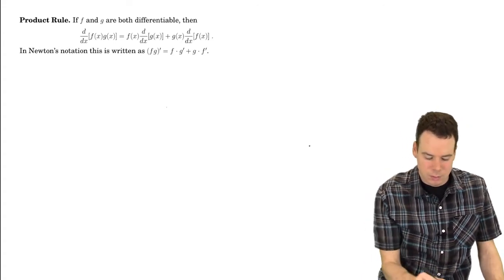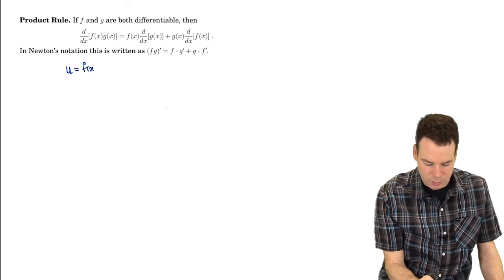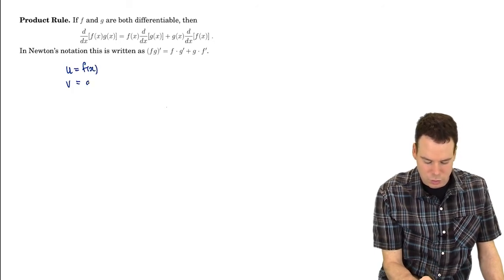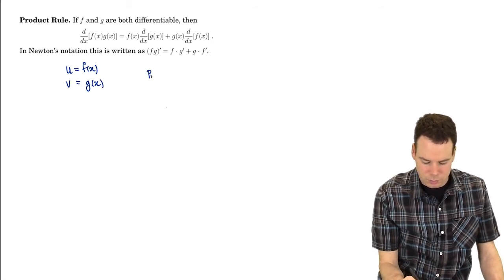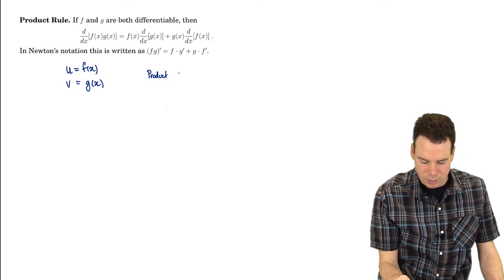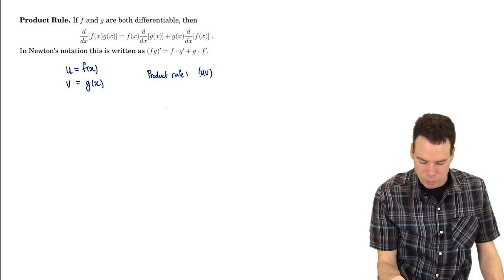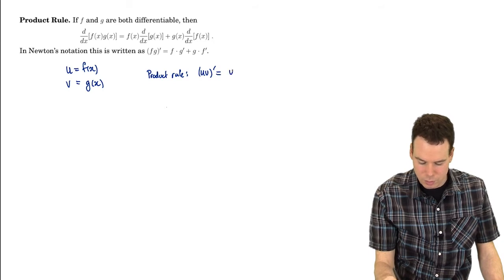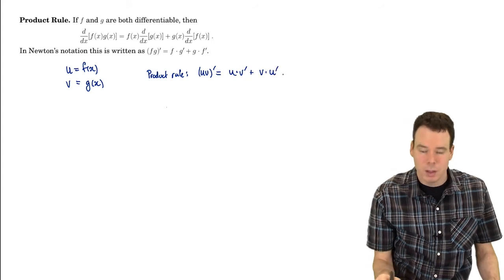In order to do this I'm going to change notation slightly. I'm going to let u be f of x and I'll let v be g of x. So in this notation the product rule can be written as uv prime is equal to u times v prime plus v times u prime and that's the form we're going to prove.